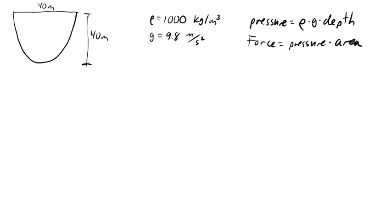We want to find the hydrostatic force on a parabolic face that is 40 meters wide at the top and 40 meters tall. This might be like the face of a dam with a lot of water behind it. We also know that the density of water is 1000 kilograms per cubic meter and gravity is 9.8 meters per second squared. Pressure is weight times depth. Here we're getting weight from the mass density times the gravity, and force is pressure times area.